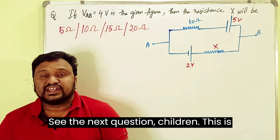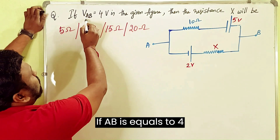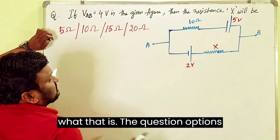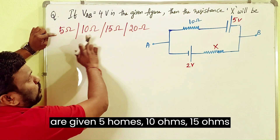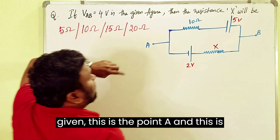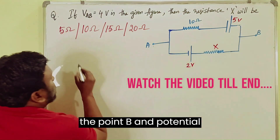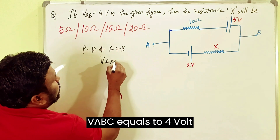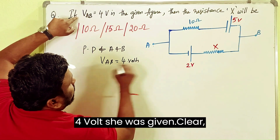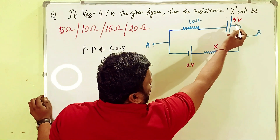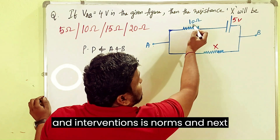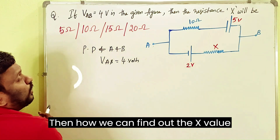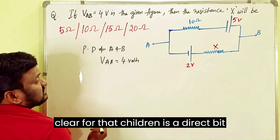See the next question. This is a direct bit: if VAB equals 4 volts in the given figure, then resistance X will be what? The options are 5 ohms, 10 ohms, 15 ohms, and 20 ohms. The point A and point B are given, and the potential difference VAB is 4 volts. One battery has EMF 5 volts with internal resistance 10 ohms, and the next battery has EMF 2 volts with resistance X.